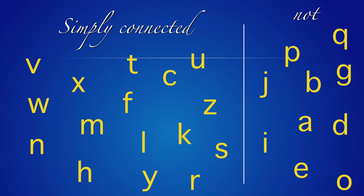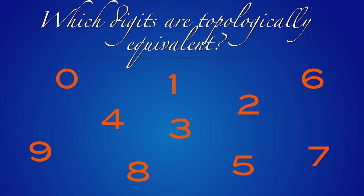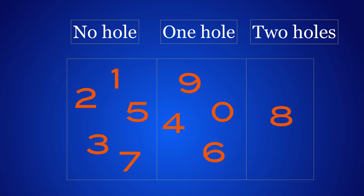Which digits are topologically equivalent? This is a little bit more subtle — we don't only want to look at connectedness, but we want to see which ones can be deformed into each other. You see there is one letter which is special, and that's the letter eight — it has two holes. Both eight and the letters with one hole — nine, zero, four, or six — are not simply connected, but they are not equivalent. Eight is not equivalent to four: you have two holes in eight and only one hole in four.